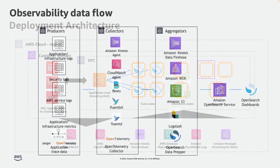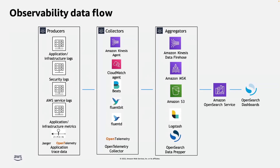Let's talk about the observability data flow. If you look at the data sources needed to build the observability data flow on AWS — the first one is you want to collect your application logs, infrastructure logs, security logs, and AWS service logs. It could be VPC logs, flow logs, CloudTrail logs, or CloudFront logs. Then application metrics. From there, you need a collector to collect this data. I talked about Kinesis Agent — you can install it along with your web server. You can also use CloudWatch Events. There are also popular open source log collection agents like Beats, FluentBit, and FluentD. FluentBit is a community-driven open source, super fast, lightweight, and highly scalable tool that can do logging and metrics processing, and it collects, filters, transforms, and augments data for logs, metrics, and traces.